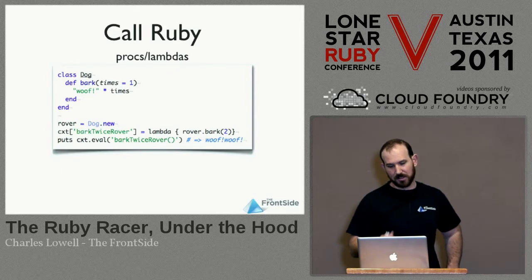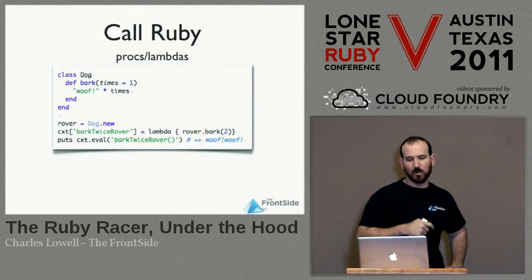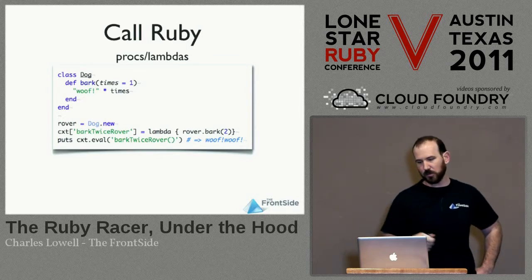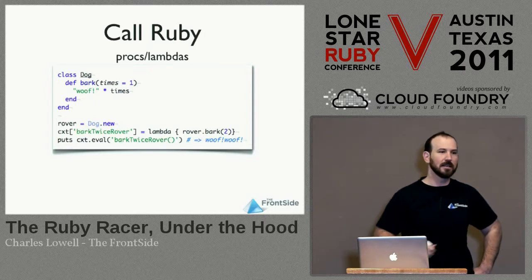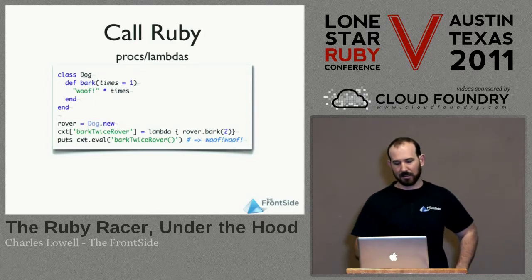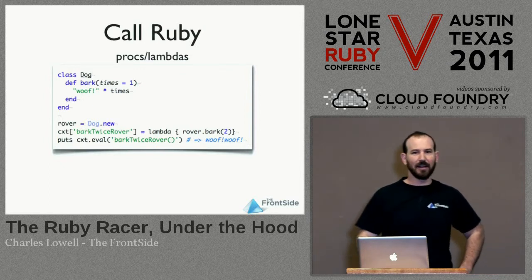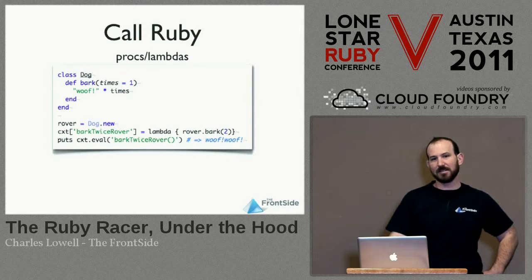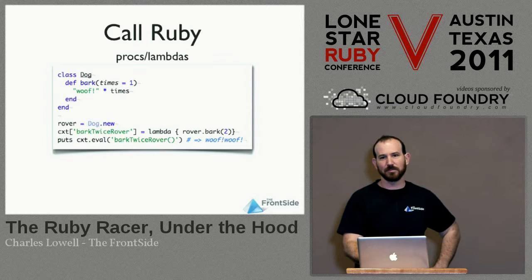One thing that's actually interesting: you want to use lambdas and not procs. Procs actually keep track of where they're going to return. So if you have a return inside a proc, you can totally blow out the entire V8 stack — because Ruby will do a jump and won't call any of the destructors. I don't even think there's a way I can solve that problem, so in the future I'm probably going to disallow procs.